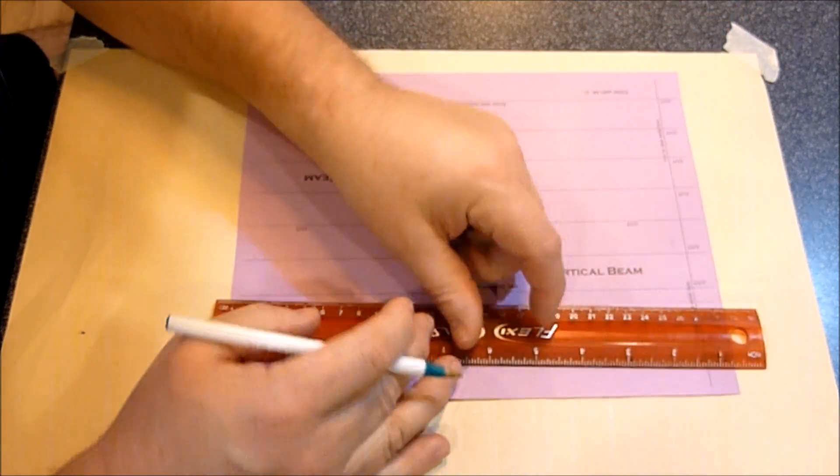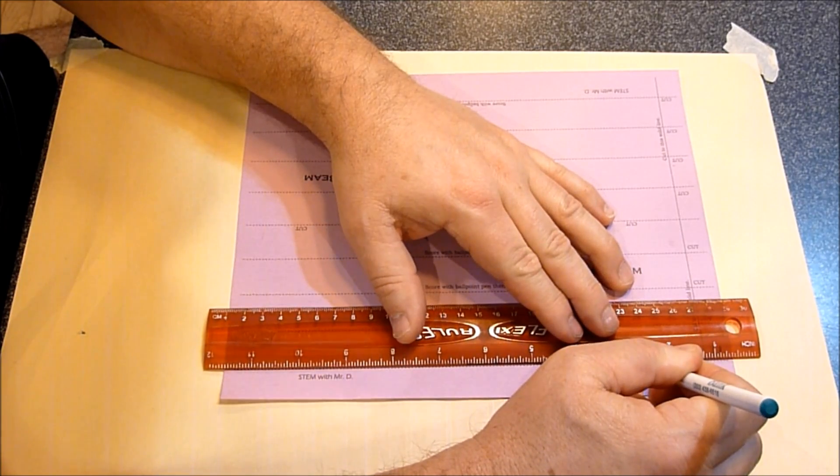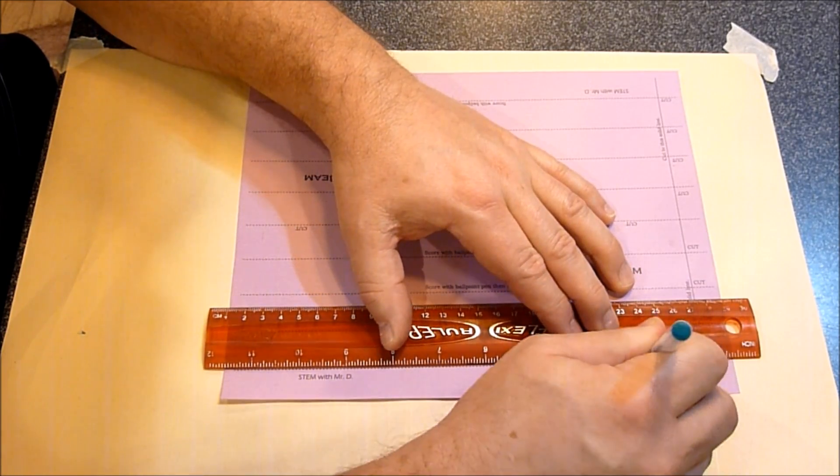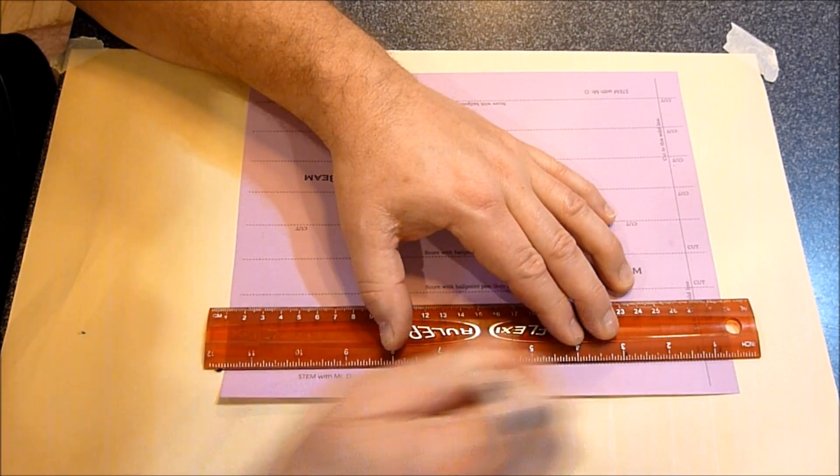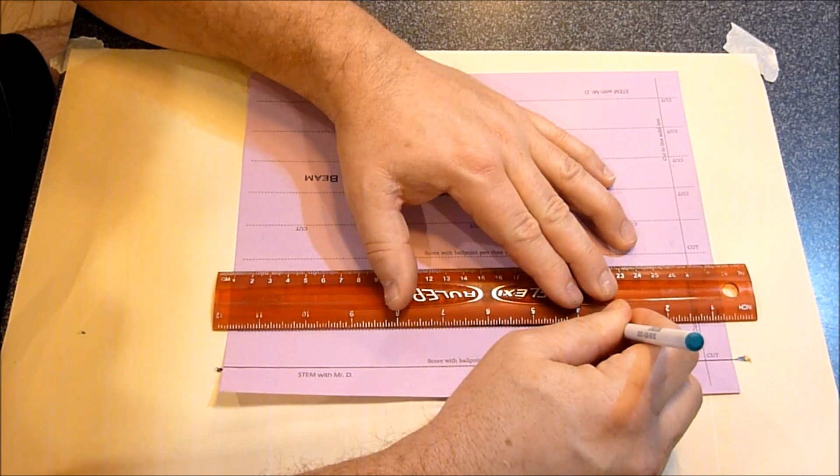All you do is take your template and put your pen on one of the dotted lines. Then you slide your ruler up to the line, line it up, and just score once this way and once that way. That's all you have to do, and it's really fast.